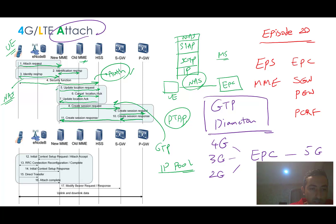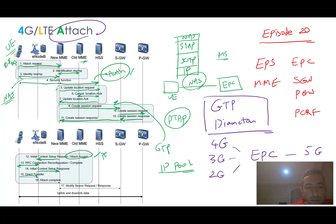At this point, everything is ready for setting up the radio session. The new MME instructs the radio with tunnel IP, IP port, and other session information. The RRC (Radio Resource Control) reconfiguration takes place between the UE and the eNodeB (the radio access node). We also have Initial Context Setup Response and Direct Transfer messages in this step.